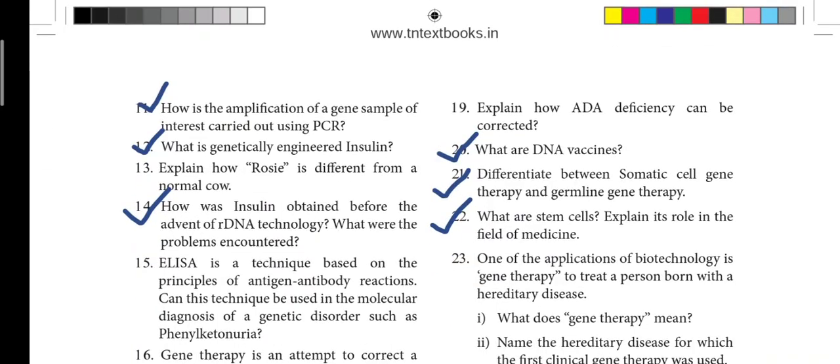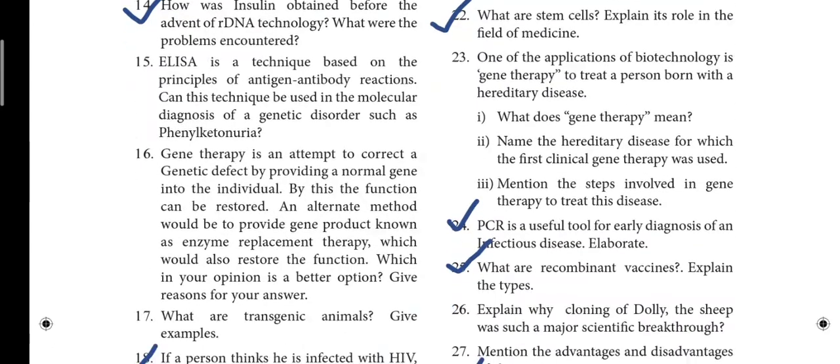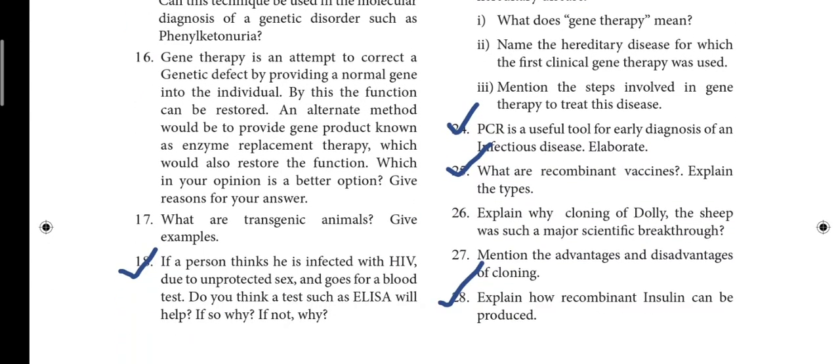Lesson 9 book-back questions: 11th question — how is the amplification of a gene sample of interest carried out using PCR? 12th question — what is genetically engineered insulin? 14th question — how was insulin obtained before the advent of recombinant DNA technology and what were the problems encountered? 18th question — if a person thinks they are infected by HIV due to unprotected sex and goes for a blood test, do you think a test such as ELISA will help? If so, why? If not, why?